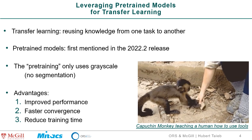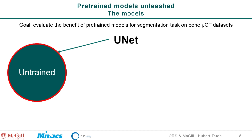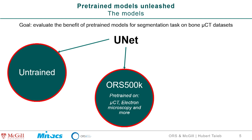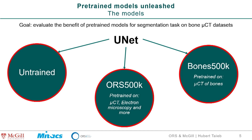I'm going to show you a case scenario to convince you this is working. The goal was to evaluate the benefit of a pre-trained model: a standard UNet versus two pre-trained models. One called ORS500K, trained on many different scientific data — micro-CT, electron microscopy, and a range of scientific data. And then Bone500K, a pre-trained model trained only with grayscale bone images — again, no segmentation at this point, just bone data. The idea is to see if it performs better.